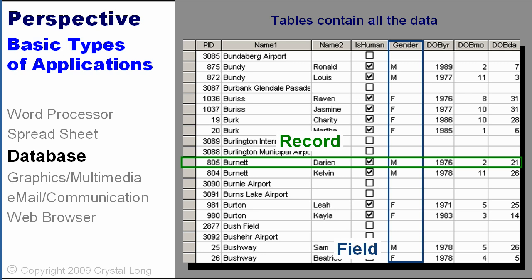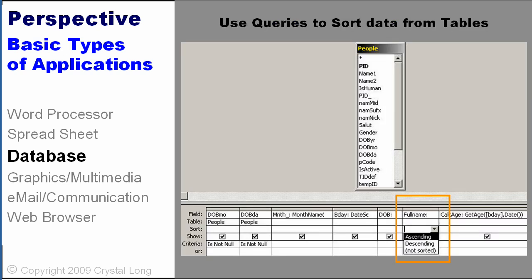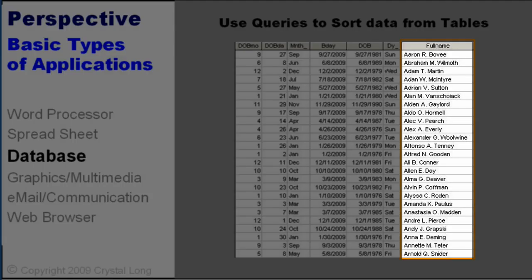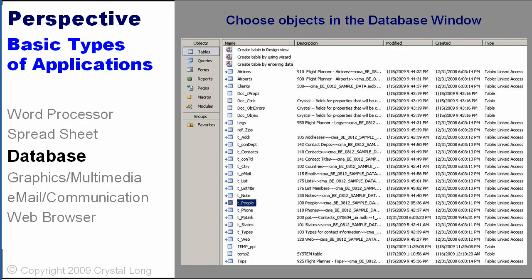A database gives you a way to structure information into rows, which are called records, and columns, which are called fields. Each of these collections is called a table. In the Microsoft Office Suite, the database application is called Microsoft Office Access. Databases give you the capability to sort and filter information. Use the database window to make new objects or choose existing objects.